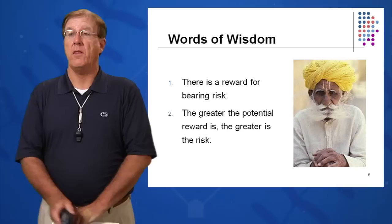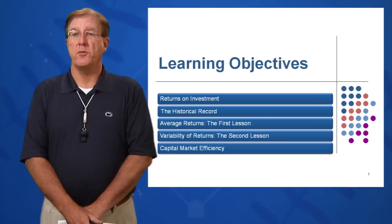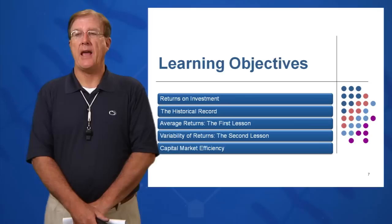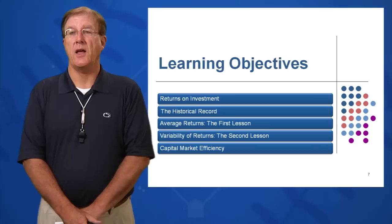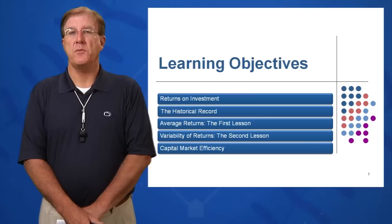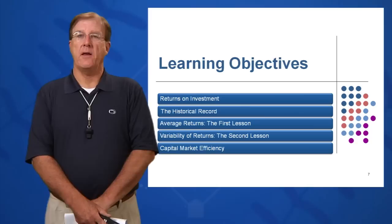In this session we're going to look at five different learning objectives. First, we're going to look at return on investment — some of these instruments and how you calculate it. Then we'll look at the historical record put together by Ibbotson and Sinkfeld in a famous study, detailing what has happened to key investment areas in the last 80 years. We'll look at average returns, the variability of returns in terms of variance and standard deviation, and capital market efficiency.